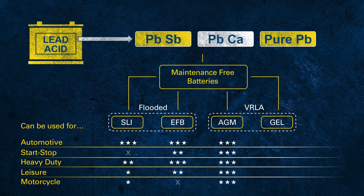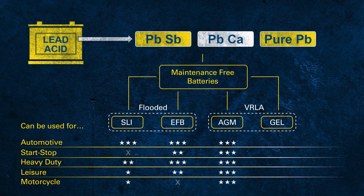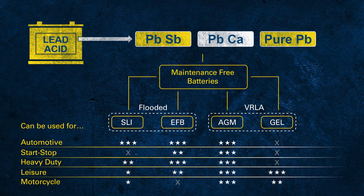AGM provides outstanding performance for all applications, including high-demand electrical systems of luxury cars and SUVs, or fully equipped long-haul trucks with an electrical parking cooler. Gel batteries are not very common in automotive applications but are often used in leisure or motorcycle applications.